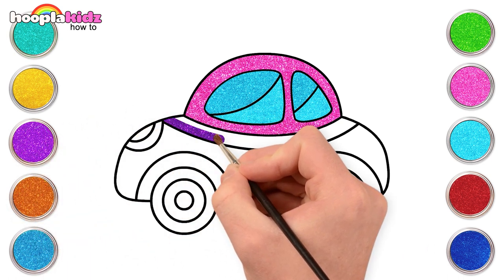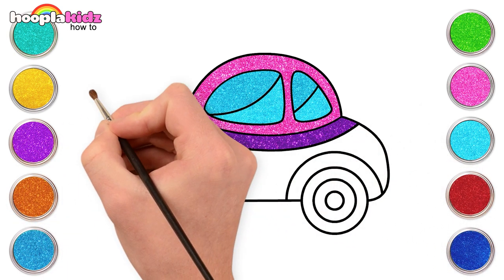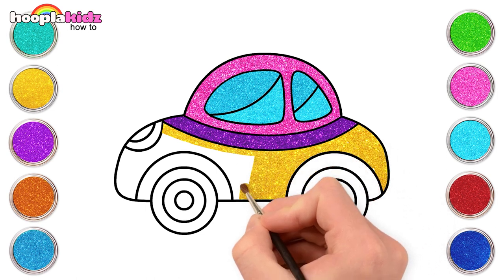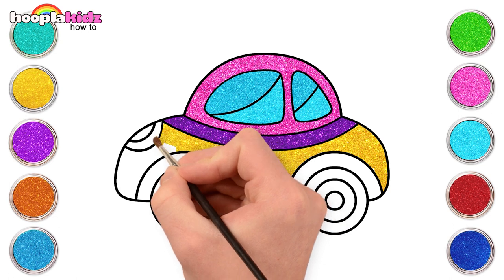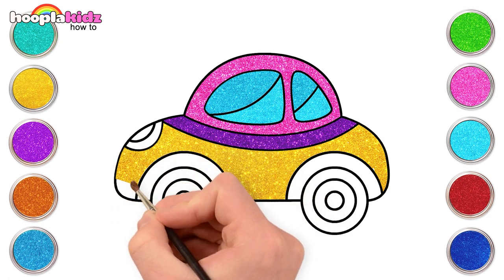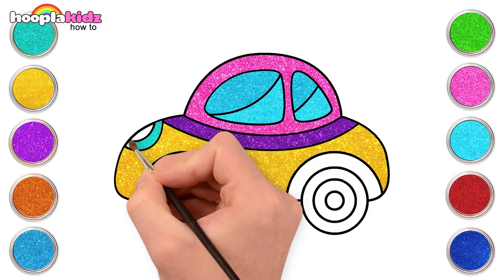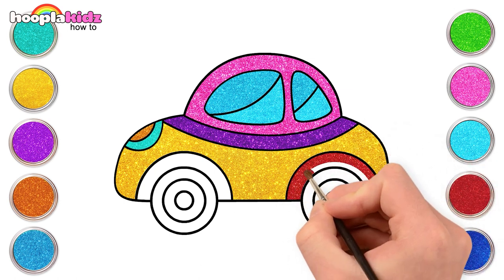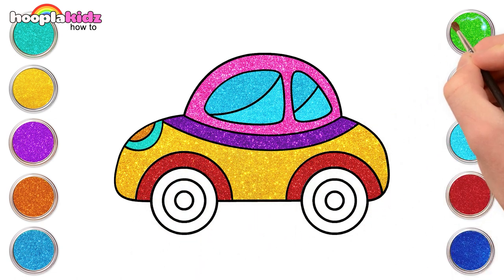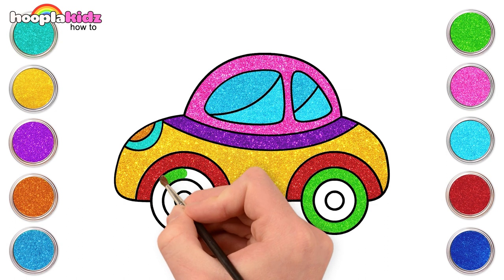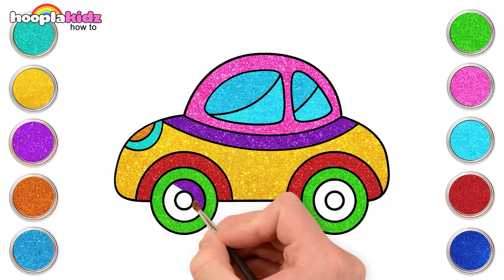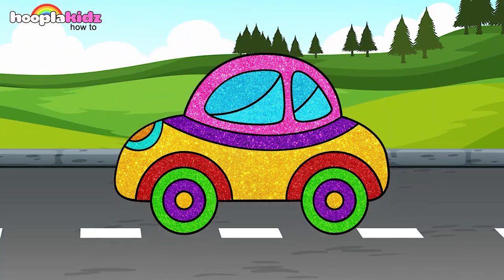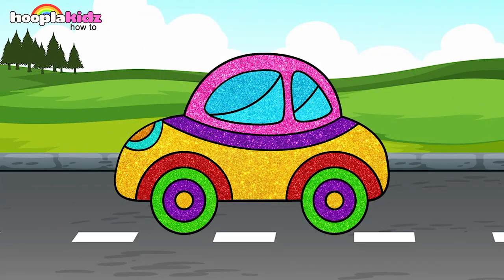Amazing. Some purple. And yellow for the rest of the car. The headlights with orange. Bling bling. Blue and cyan. Let's make the wheels fun and colorful too. Green. Purple. And gold. Yay! Here is the coolest car ever. Keep watching for more videos.